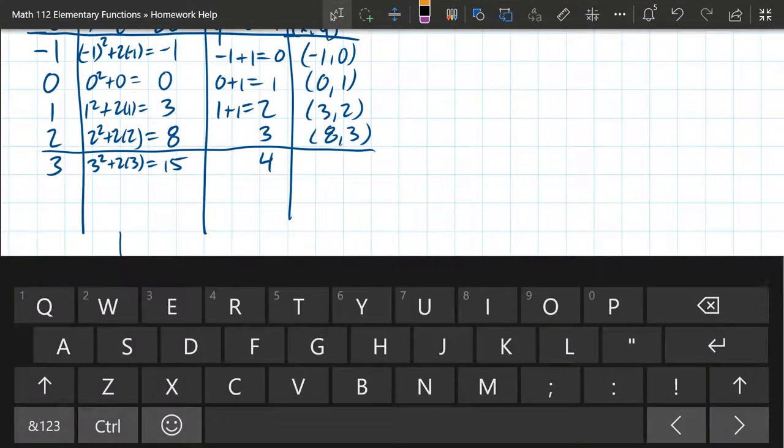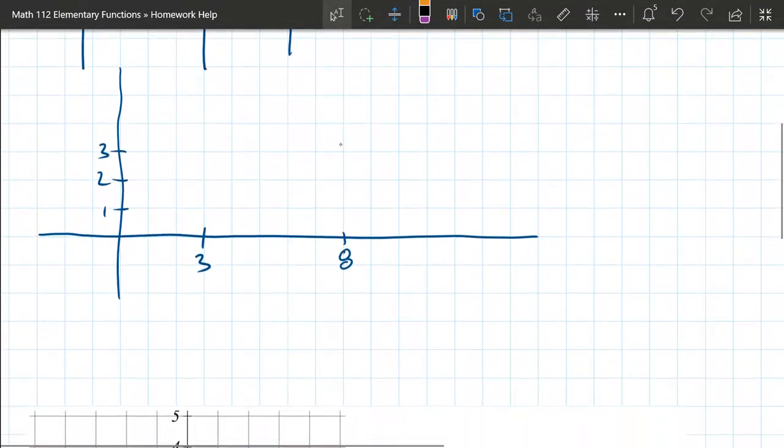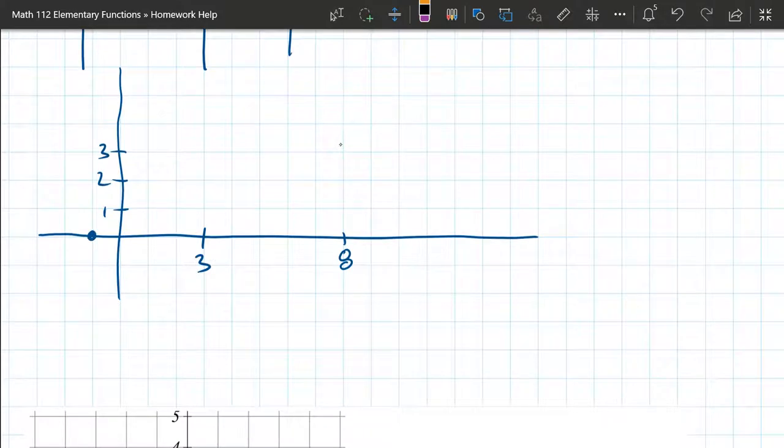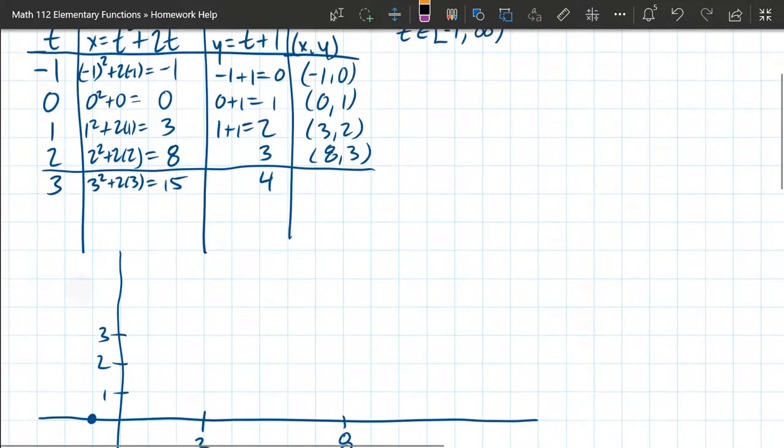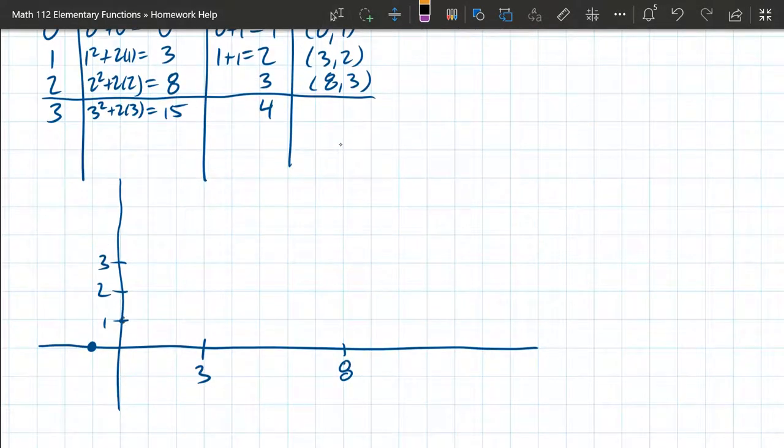Alright, so these points right here, these 4 points, negative 1, 0. Negative 1, 0. And next up is 0, 1. And then 3, 2, 8, 3.